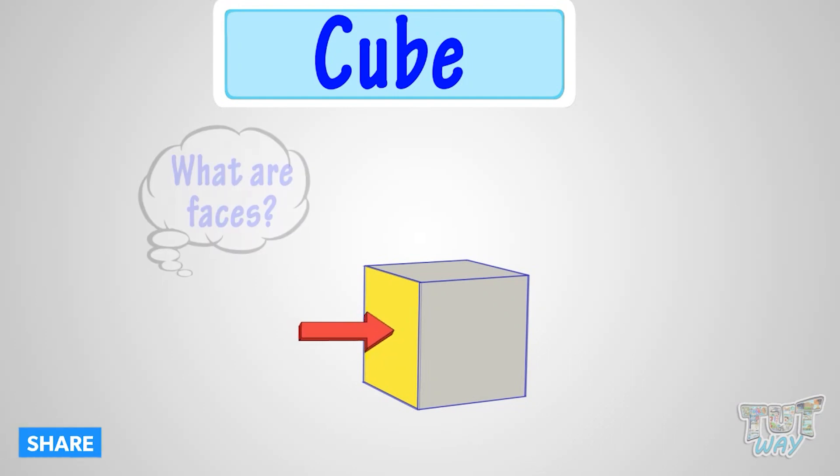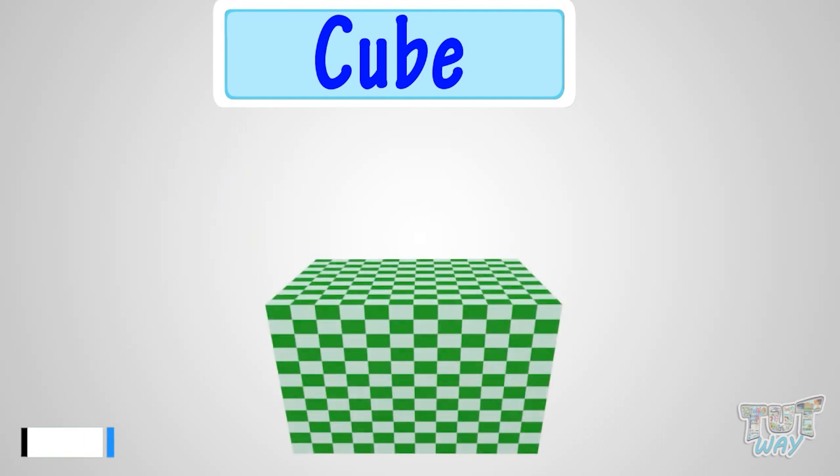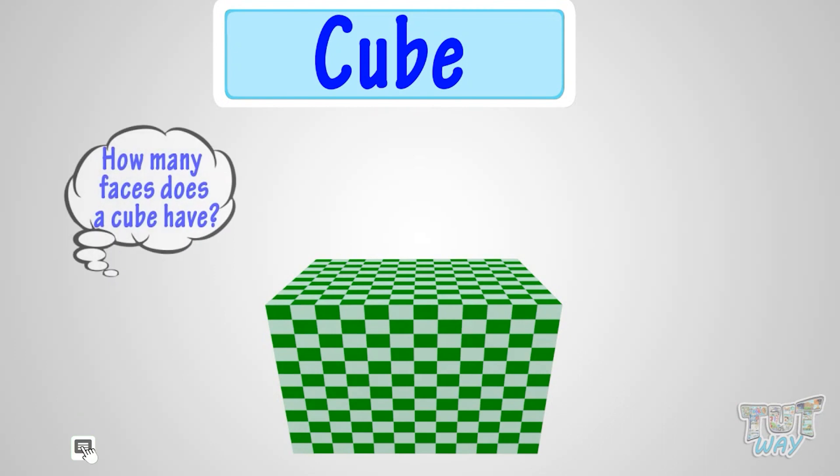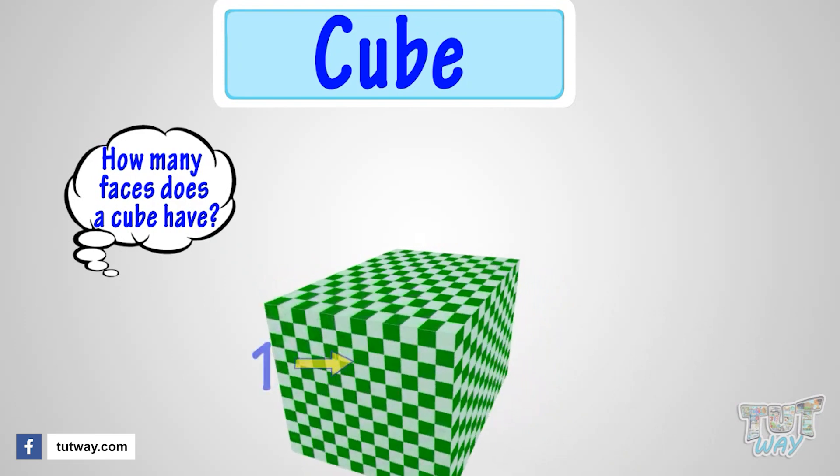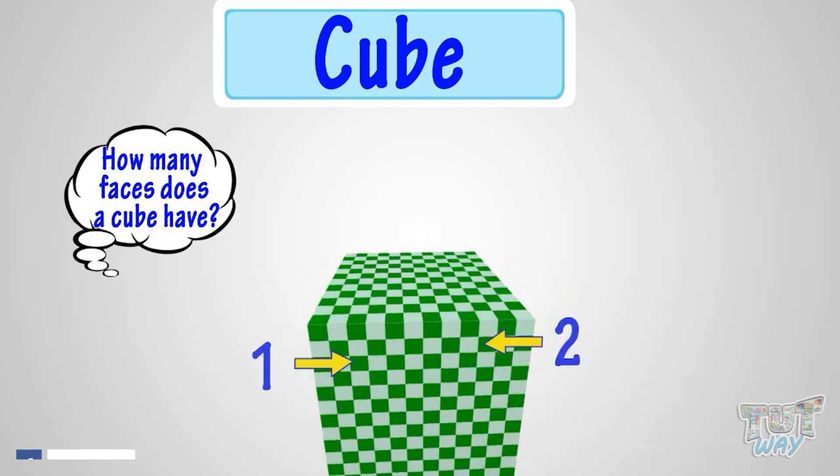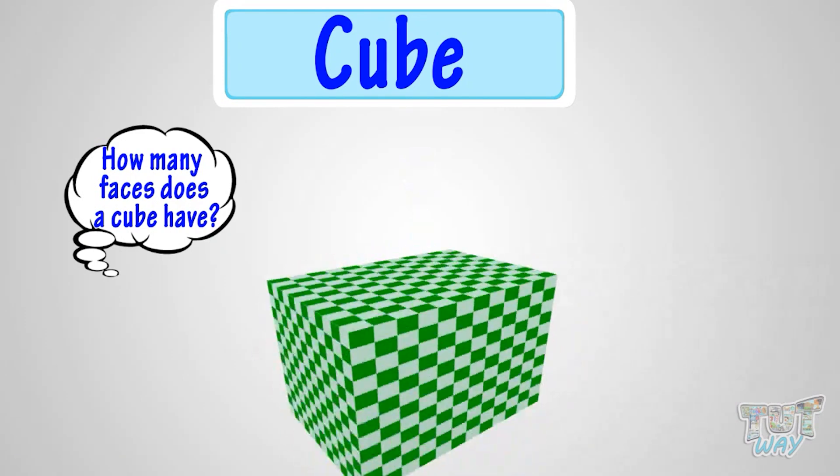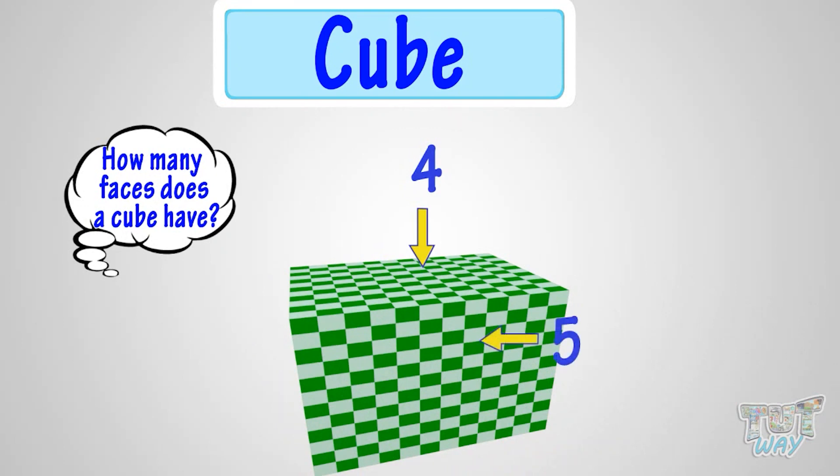Let's take example of a dice. To learn how many faces does a cube have, as a dice is a perfect example of a cube. Let's count the faces of a dice, which is a cube. 1, 2, 3, 4, 5, 6.